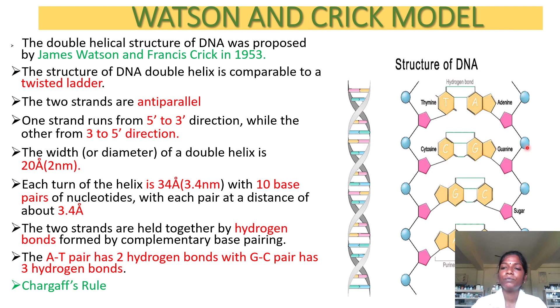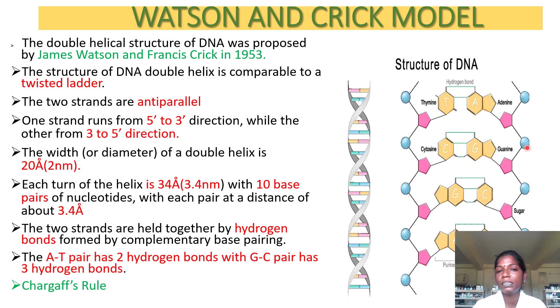The function of DNA is mainly to store genetic information, and it undergoes replication during cell division. This is what the Watson and Crick model of DNA is about.